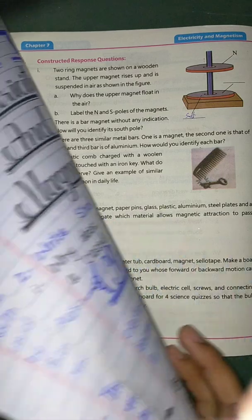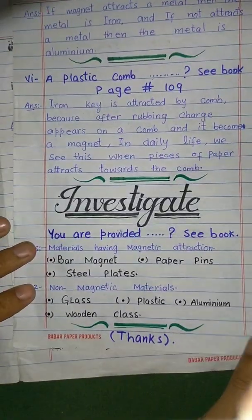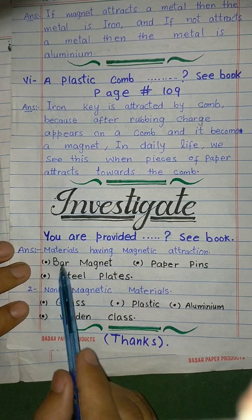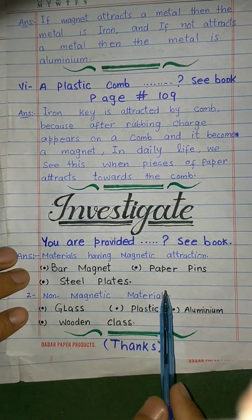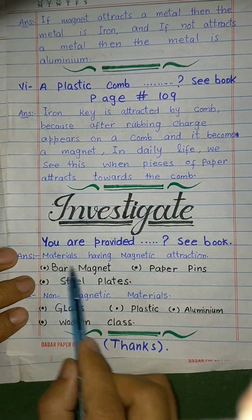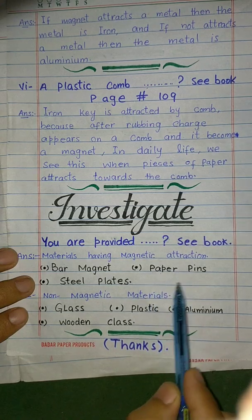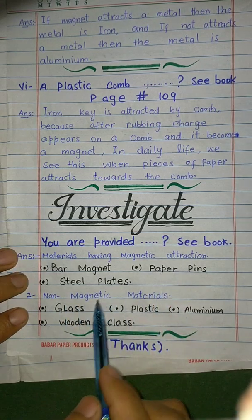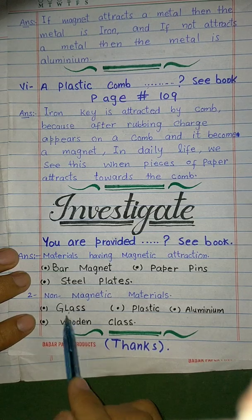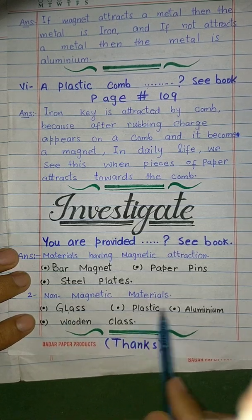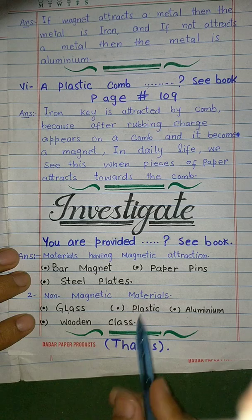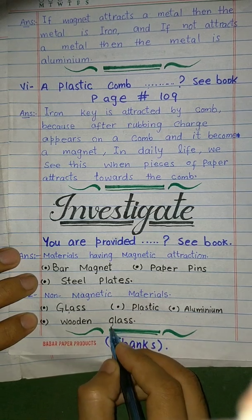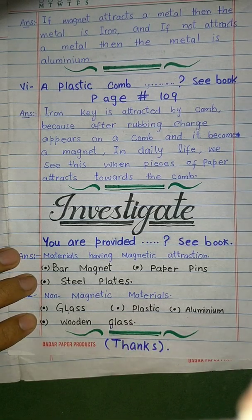We identify material as magnetic or non-magnetic by checking whether it has magnetic attraction. For example, glass is non-magnetic, meaning a magnet does not attract glass. Materials that are attracted to a magnet are classified as magnetic.